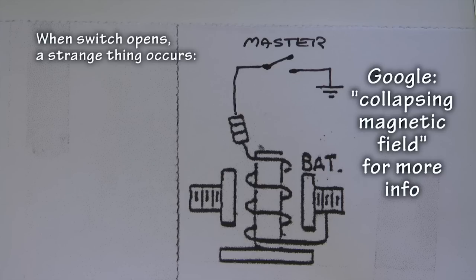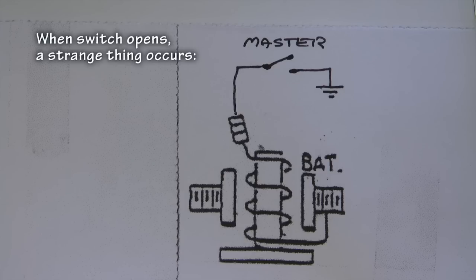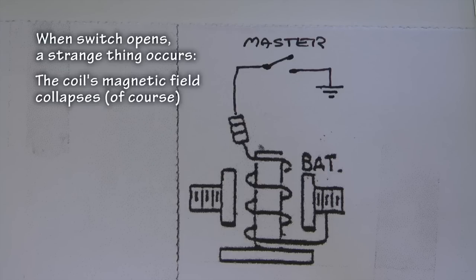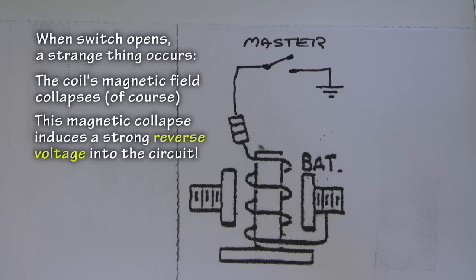It turns out that when we turn off the master switch and stop the flow of current in our coil, the magnetic field in that coil drops back to nothing very quickly. And here is where the physics comes in. A collapsing magnetic field inside of a coil of wire induces a strong reverse voltage a hundred times greater than the original 12 volts used to energize the coil and that goes back into the circuit.